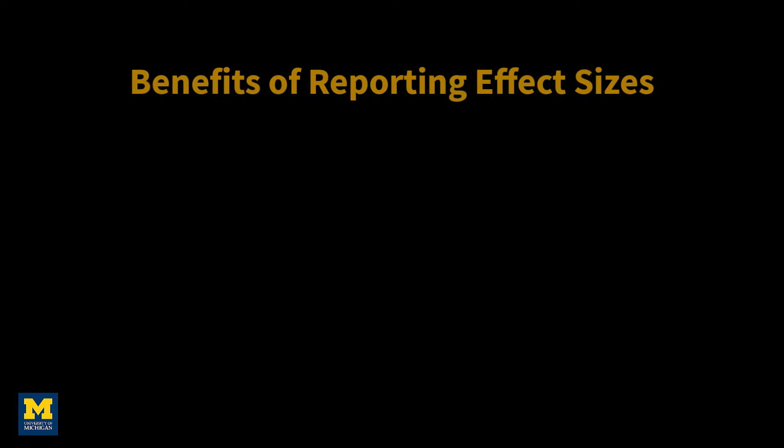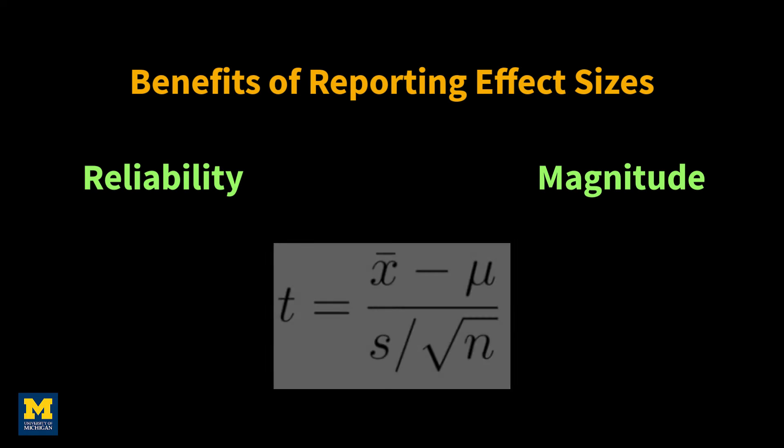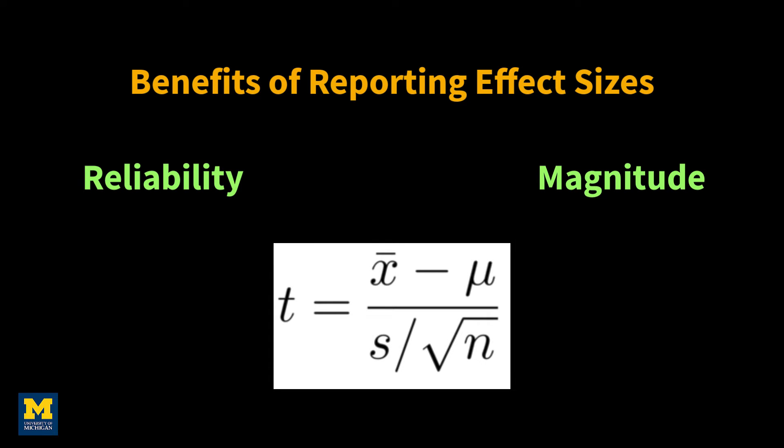Instead, reporting both the statistic and the effect size together gives the reader a sense of the effect's reliability and its magnitude. Since the t-statistic is a mixture of both magnitude and variability, it is important to unpack the magnitude aspect of it in order to evaluate both its practical significance and whether it might be an artifact.